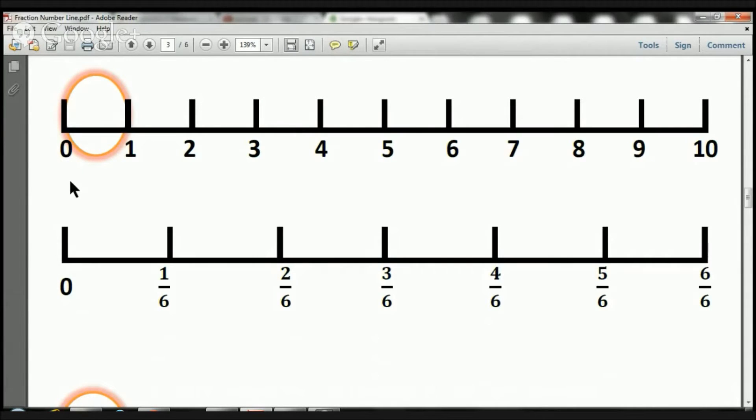Just like up here, we're starting from 0 and we're going to 1. That's the same thing down here. Here we have 1, 2, 3, 4, 5, 6 pieces.